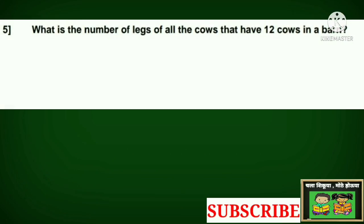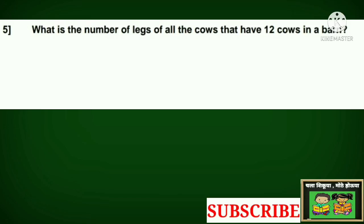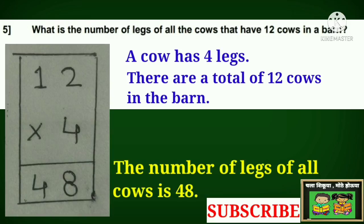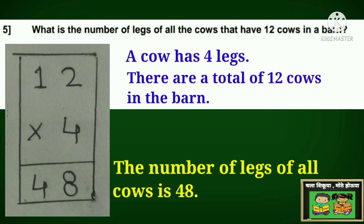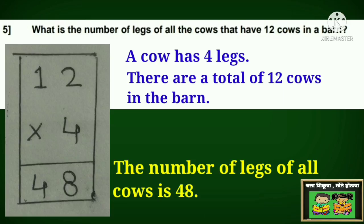Question number 5. What is the total number of legs of all the cows if there are 12 cows in a barn? A cow has 4 legs. There are a total of 12 cows in the barn. So, 12 into 4 is equal to 48. The answer is, the number of legs of all cows is 48.